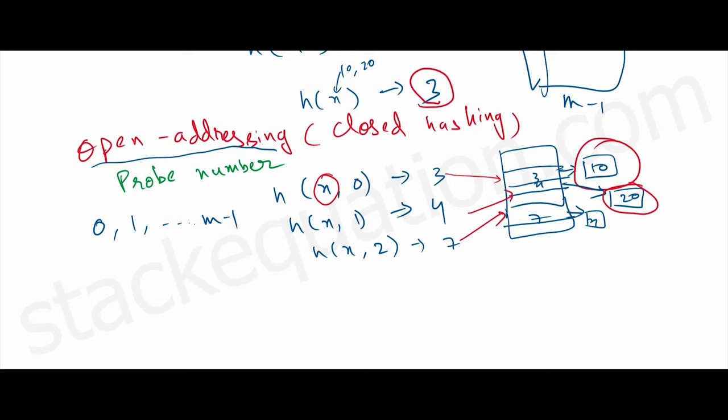For these number of attempts, we assign a probe number to each attempt: probe numbers 0, 1, 2, and so on. What is the maximum number of attempts we can take? That means, what is the maximum probe number we can have?